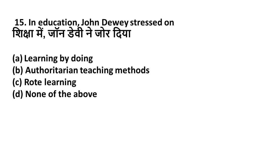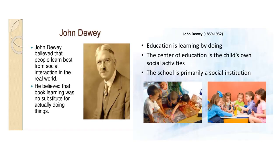Question 15: In education, John Dewey stressed on — Option A: Learning by doing, Option B: Authoritarian teaching methods, Option C: Rote learning, Option D: None of the above. John Dewey stressed on learning by doing — Option A is the right answer. Dewey believed people learn best from social interaction. According to him, education is learning by doing, and the center of education is the child's own social activities. The school is primarily a social institution.